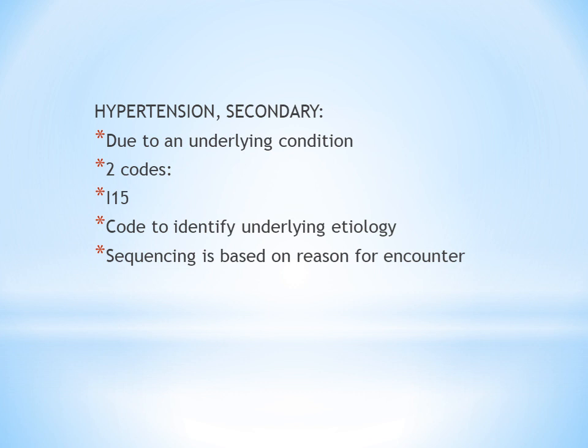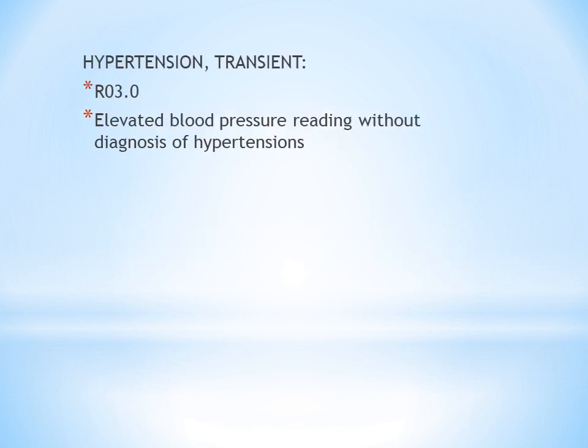After secondary hypertension, if the patient is in the hospital and their blood pressure level is elevated but it is not a confirmed diagnosis, that is called Transient Hypertension, coded as R03.0.